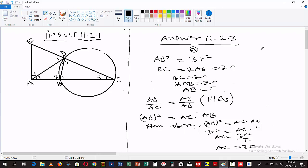Now we want to find AC. AD² is equal to AC, which is 3r, multiplied by AB, which is r. Therefore, AD² is equal to 3r².